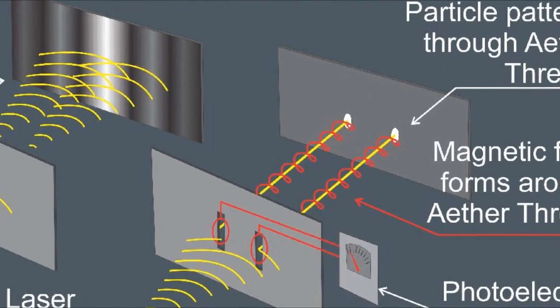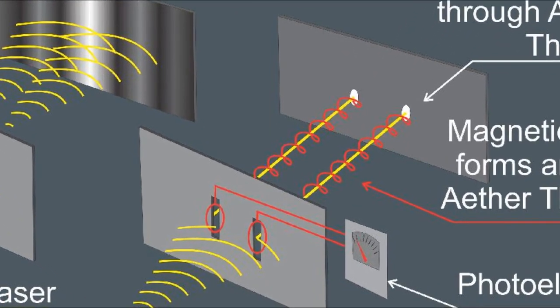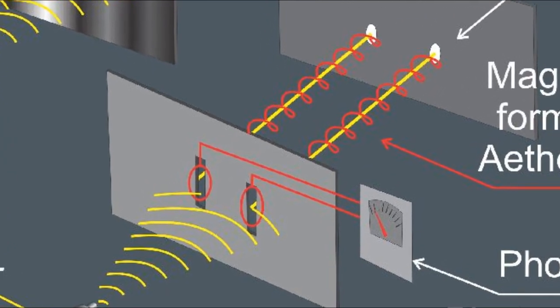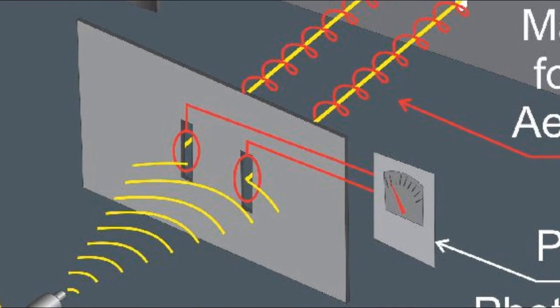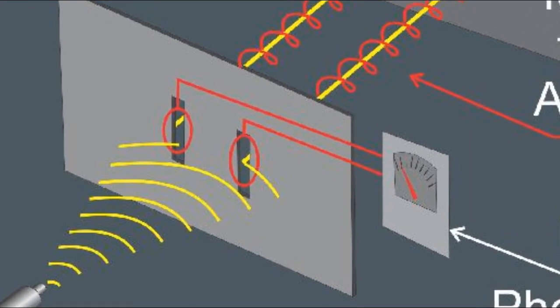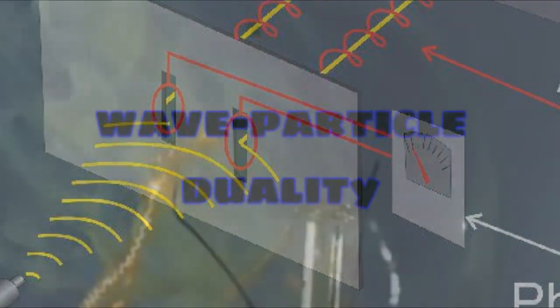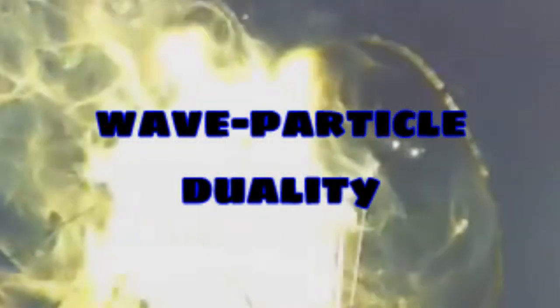This experiment proved beyond a shadow of a doubt that waves of energy can behave like particles of matter, and the particles of matter can behave like waves of energy. This odd quantum quirk of nature is known as wave-particle duality.